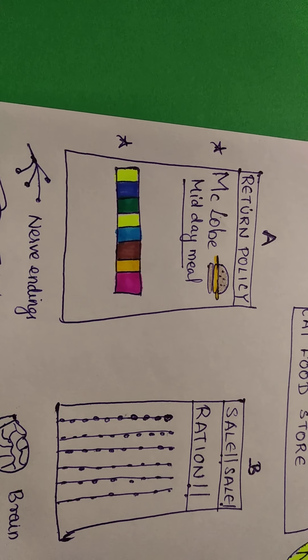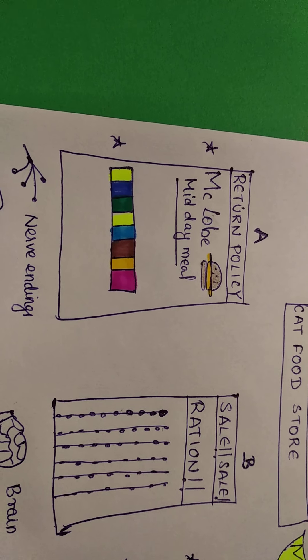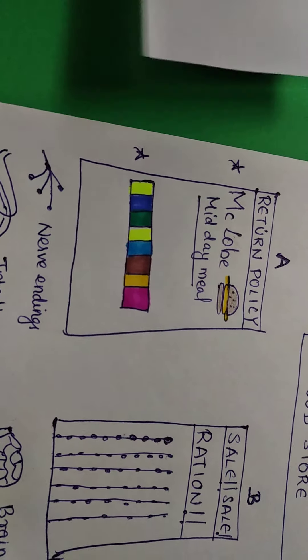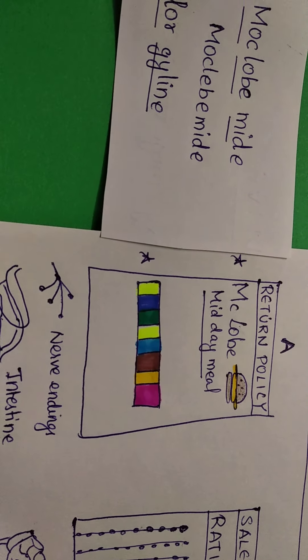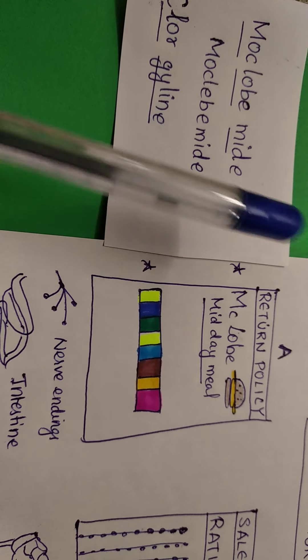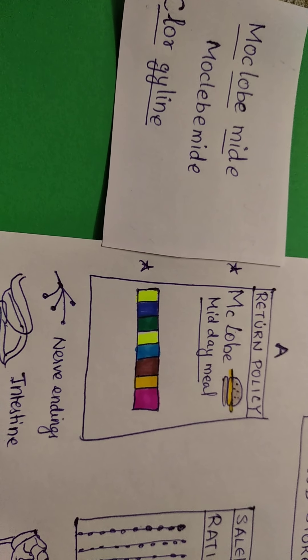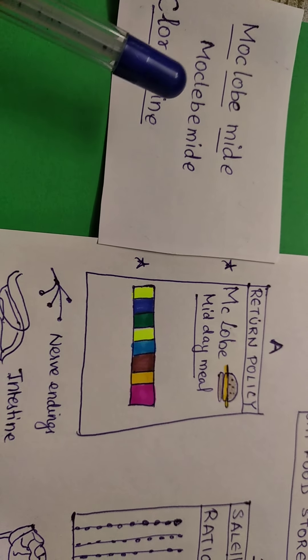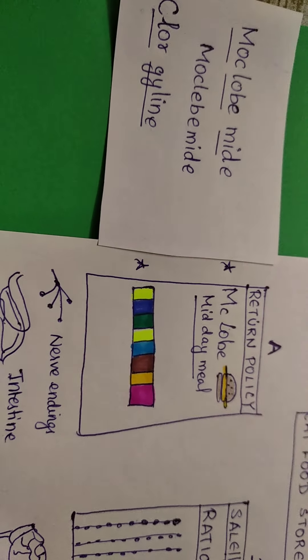And there is a colorful candy in a line. So the drugs are these: Moclobemide, Midday Meal, Moclobemide. Or in some texts it's written, the spelling is like this. Instead of L-O-B-E, it's L-E-B-E. So Moclobemide or Moclebemide.